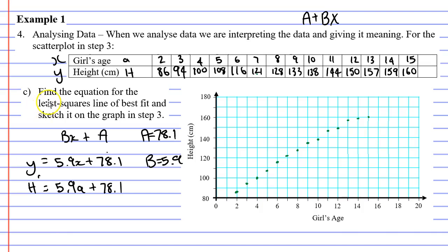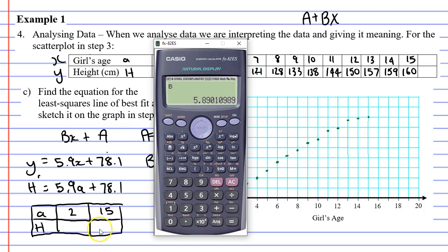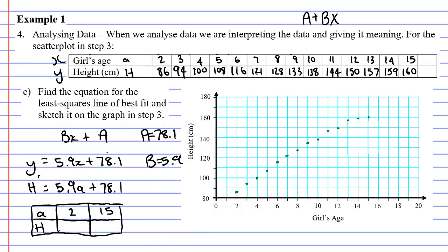Now, when we read question C, it doesn't just want the equation for the least squares line of best fit, which we've got here. It also wants us to sketch it on the graph. So we need to pick a couple of values. I think we'll pick the number 2 and the number 15. So I've just made a table of values, and I'm just going to grab my calculator and work out what my height will be for an age of 2 and 15. And I'm just going to substitute it into my equation. So let's go 5.9 times A, which is 2, times 2, plus 78.1. And that comes to 89.9, which we'll just round to 90. So that'll be 90.